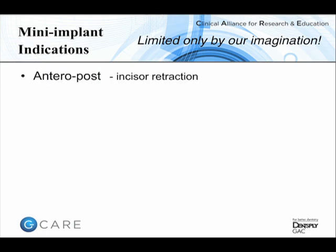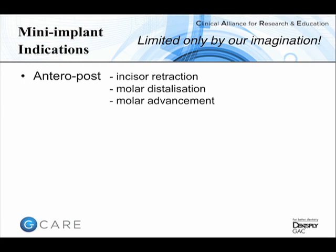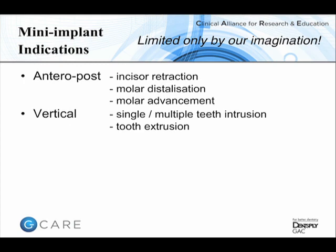When thinking about mini-implant indications, I think about usage in three dimensions. Starting with the anterior-posterior dimension: retracting prominent incisors, distalizing molars to create space, or protracting molars to close space in patients with missing premolars or molar teeth. The vertical dimension is particularly novel, allowing intrusion of single or blocks of teeth, or moving ectopic teeth such as canines into the arch. For transverse correction, mini-implants are very neat because if a patient has a significant centreline discrepancy, we only need to reinforce anchorage on one side of the arch, whereas conventional anchorage inadvertently reinforces both sides.